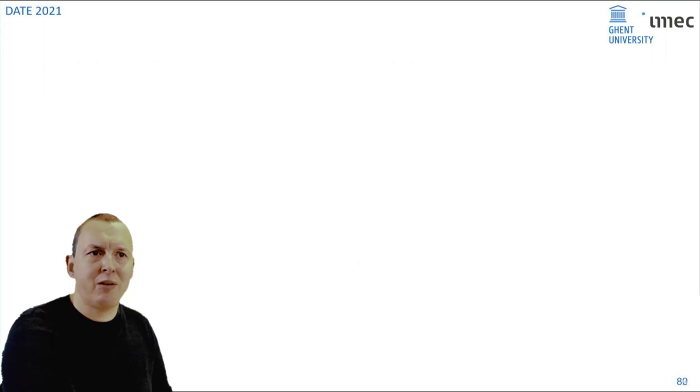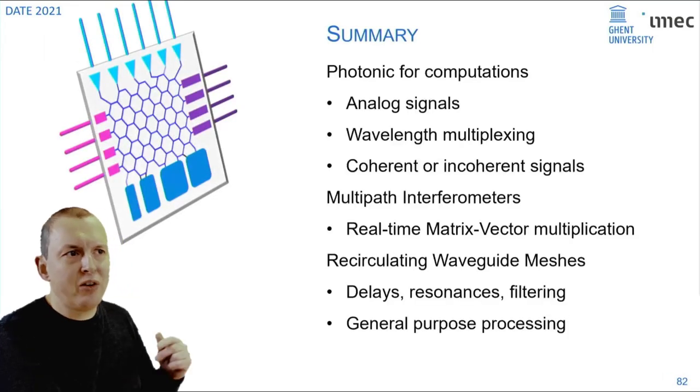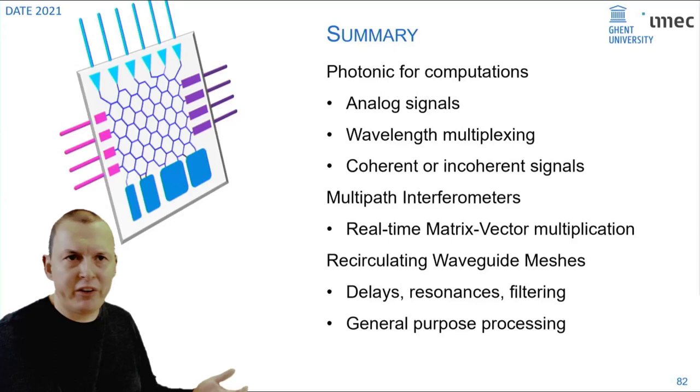That brings me to the end of my presentation. If we're looking at photonics for computation, we're looking at the processing of analog signals where we can use wavelength division multiplexing to combine many signals at the same time in the same system. You can process them coherently or incoherently depending on how you add them up, and this gives us these multipath interferometer circuits that allow you to do real-time matrix vector multiplication.